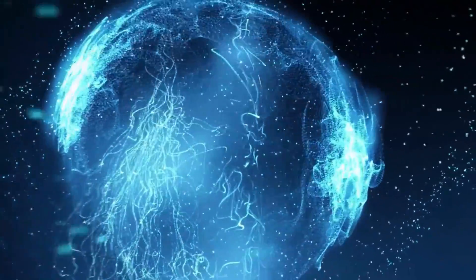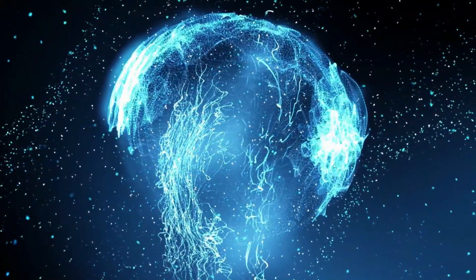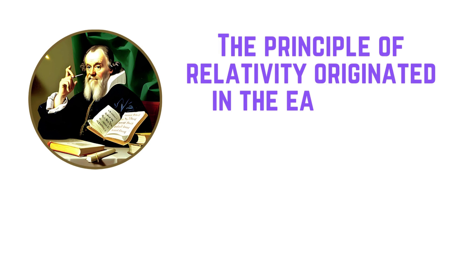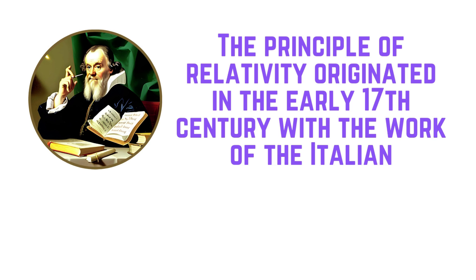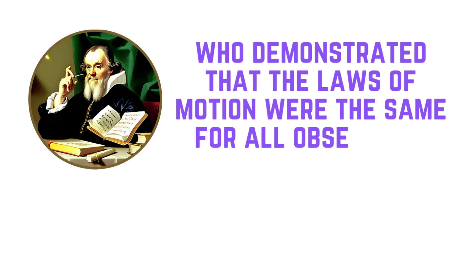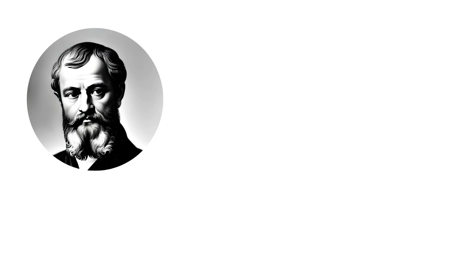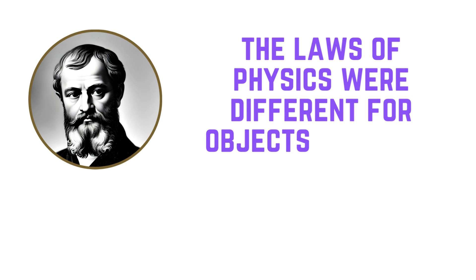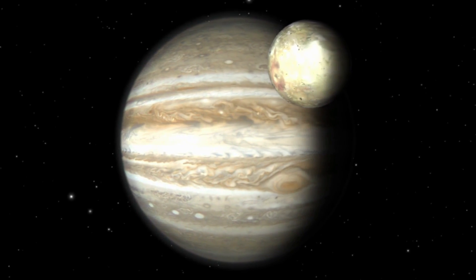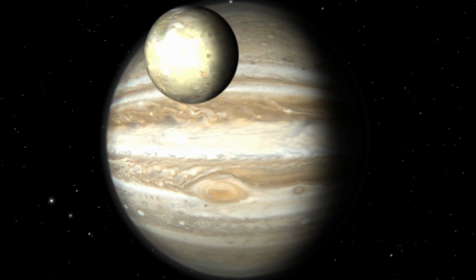From the ancient philosophers to the modern-day scientists, the concept of relativity has played a significant role in shaping our understanding of the world around us. The principle of relativity originated in the early 17th century with the work of the Italian physicist Galileo Galilei, who demonstrated that the Laws of Motion were the same for all observers, regardless of their state of motion. This insight challenged the Aristotelian notion that the Laws of Physics were different for objects in motion and at rest. Galileo's work laid the foundation for the principle of relativity, which asserts that the Laws of Physics are the same for all observers in uniform motion relative to one another.